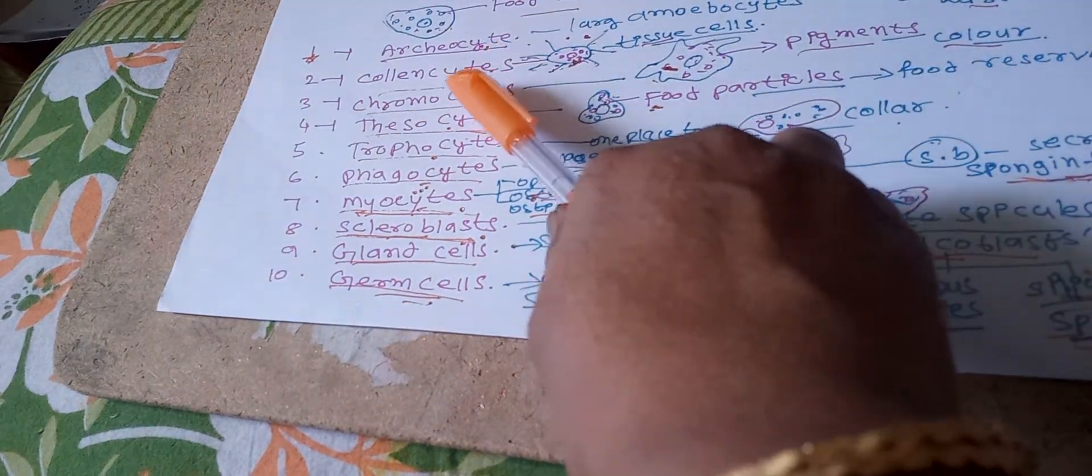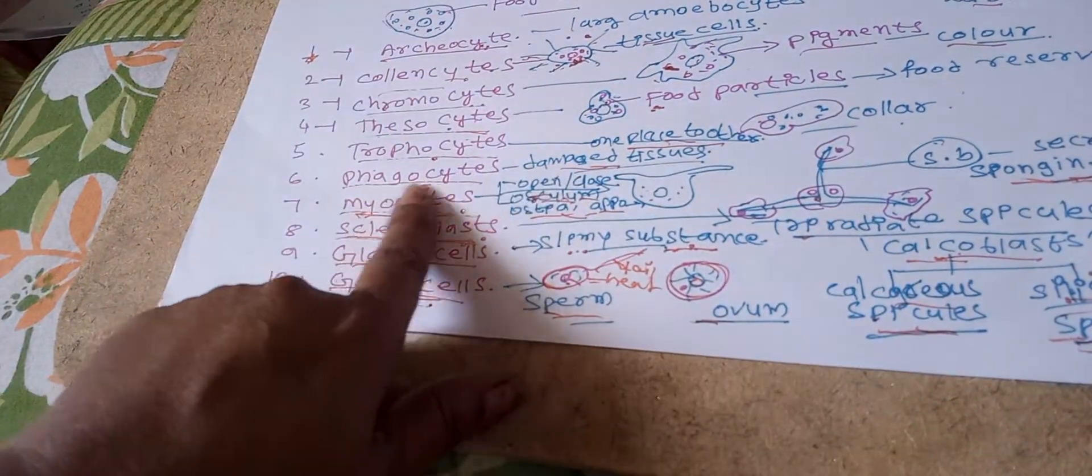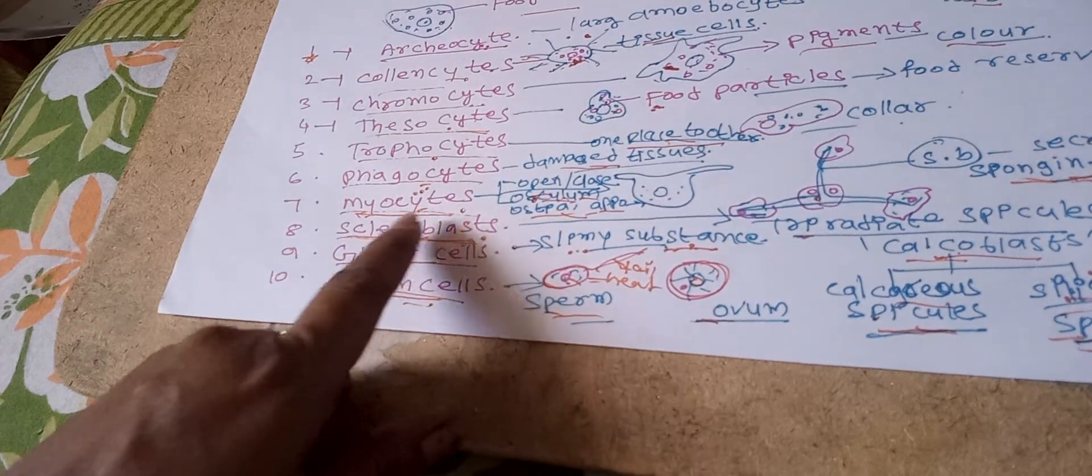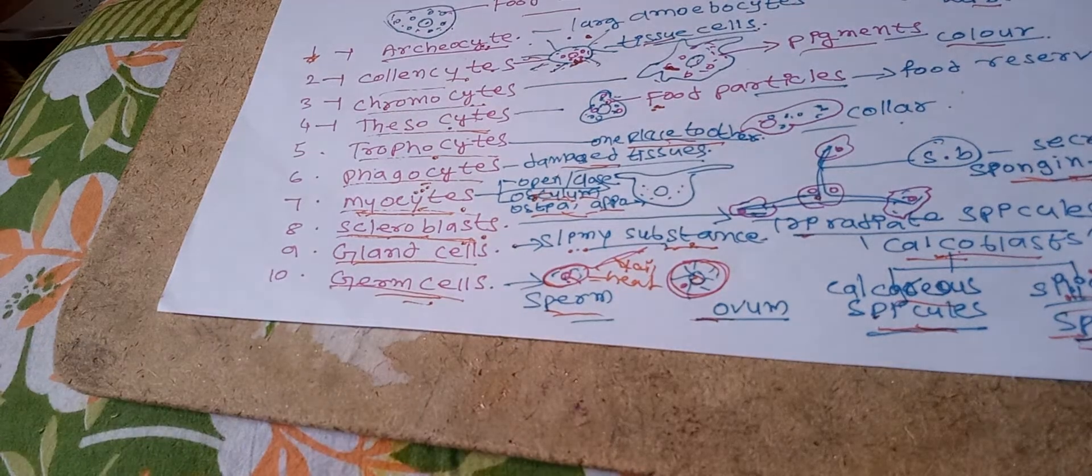Okay. Archaeocytes, collencytes, chromocytes, thesocytes, trophocytes, phagocytes, myocytes, scleroblast cells, gland cells, and germ cells. Thank you.